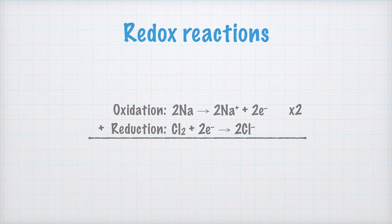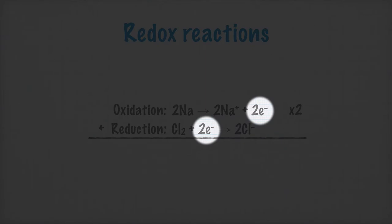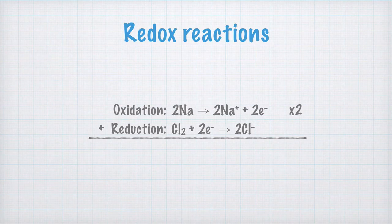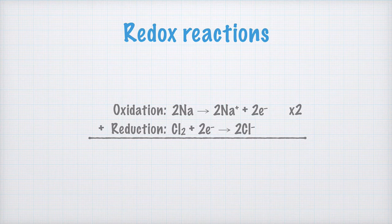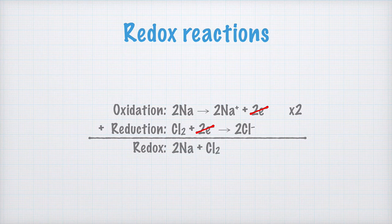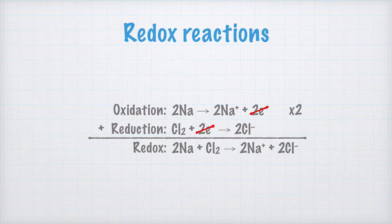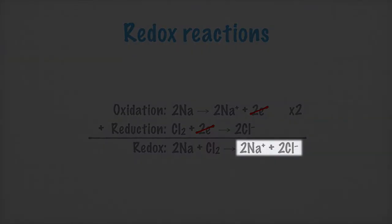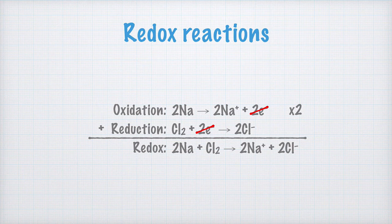As we add the two formulas together, we see two electrons on both sides of the reaction arrow. Since the electrons given off in the oxidation are used directly in the reduction, we can remove them from the total reaction. Putting it all together: 2Na + Cl2 → 2Na⁺ + 2Cl⁻. We can also combine the positively charged sodium ions and negatively charged chloride ions into uncharged sodium chloride NaCl, giving us 2NaCl.